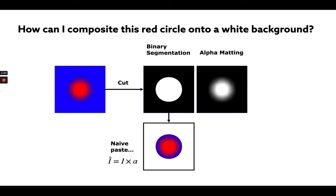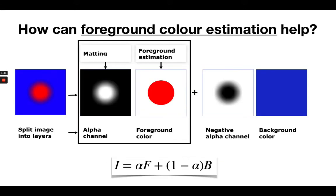We can also understand that we need to solve for the transparency between the red circle and the blue background. This is known as alpha-matting. However, if we still, again, do a naive paste, we end up with a terrible result. So how can foreground color estimation help?